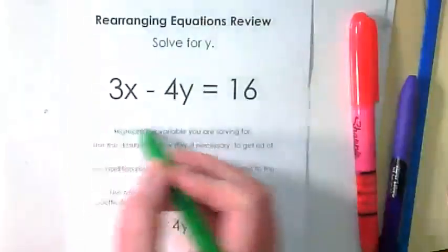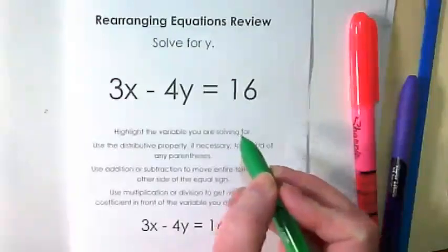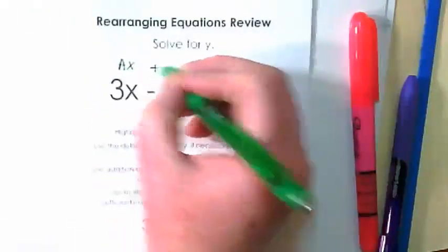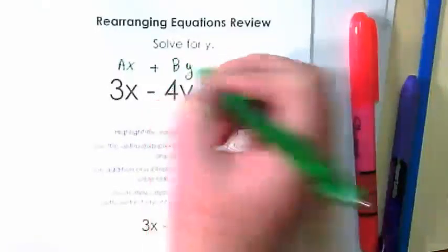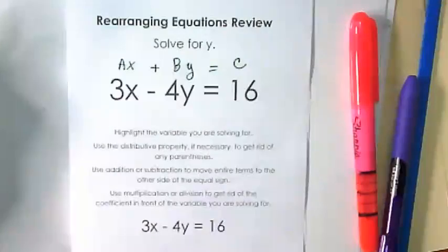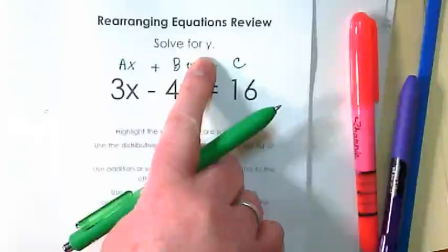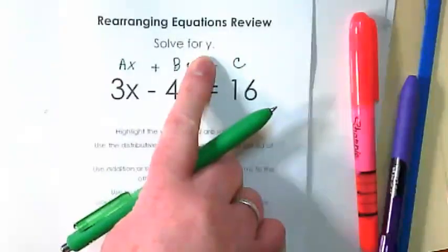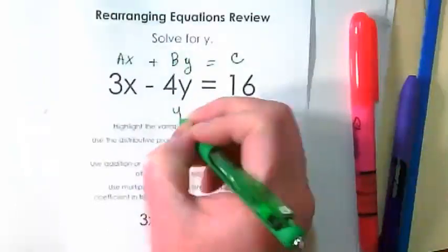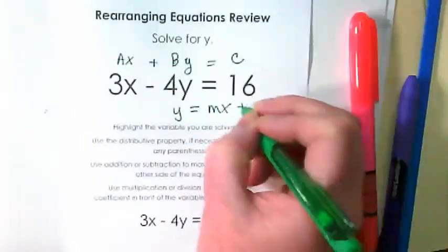This is an equation in what kind of form? Who remembers what we call this one? This is standard form. It is currently in AX plus BY equals C form. Thumbs up if you're remembering this. We want to solve it for Y. And what's that going to put it into? It's going to end up being in Y equals MX plus B.